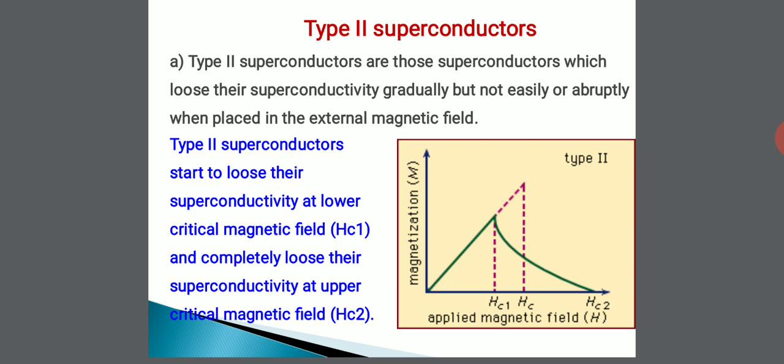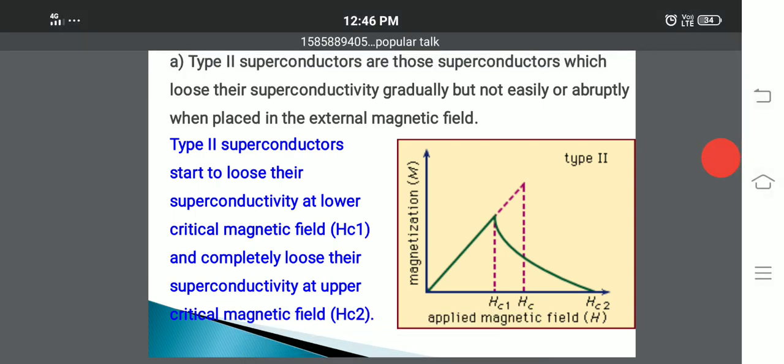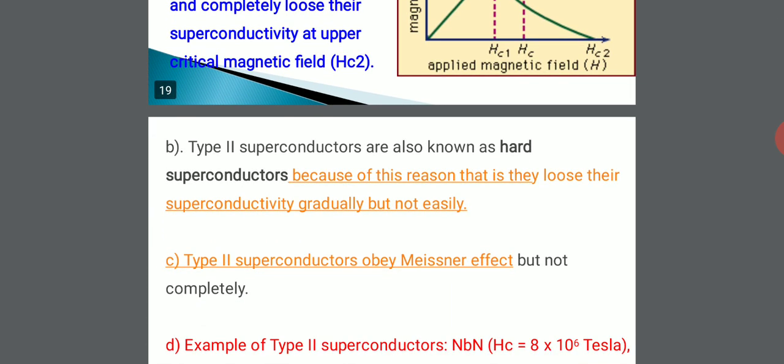HC1 is called the first critical magnetic field or lower critical magnetic field, and HC2 is called the upper critical magnetic field. The region between HC1 and HC2 is called the vortex state or mixed state. The region below HC1 is the superconducting state, and the region above HC2 is the normal conducting region.